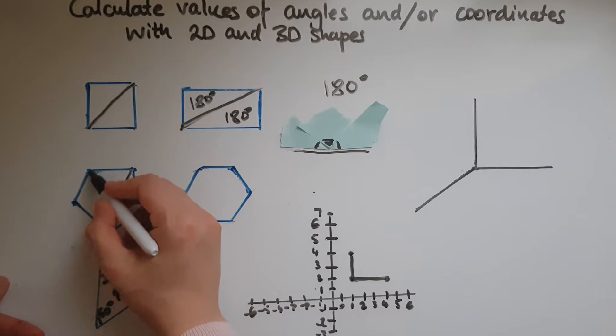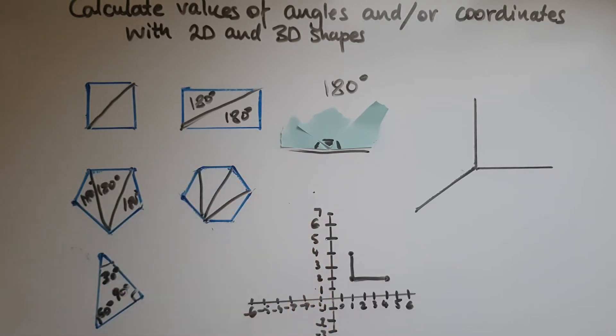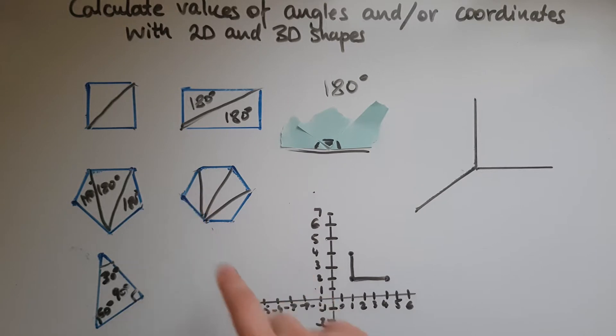And same thing over here, 180 and 180 and 180. And same with all of these. So the key thing to remember is that the angles within a triangle add up to 180 degrees.